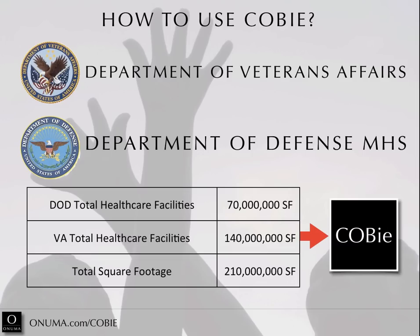What about COBie for owners like the Department of Veterans Affairs and the Department of Defense Military Health System? They have 210 million square feet of buildings. We're in the middle of a strategic plan project right now to define how data from early planning can go through design and construction and into operations. Different tools are used today and they're not connected — they need to be connected to move data and manage facilities and energy.